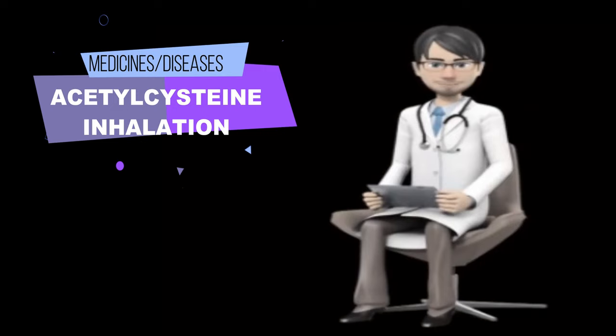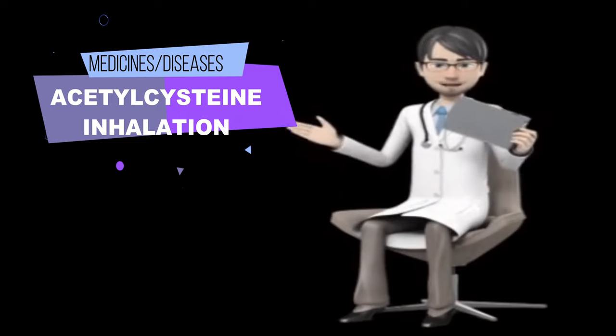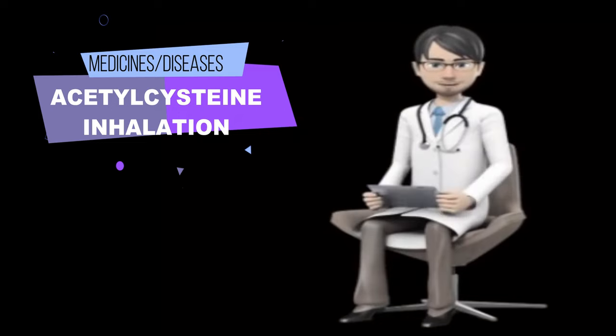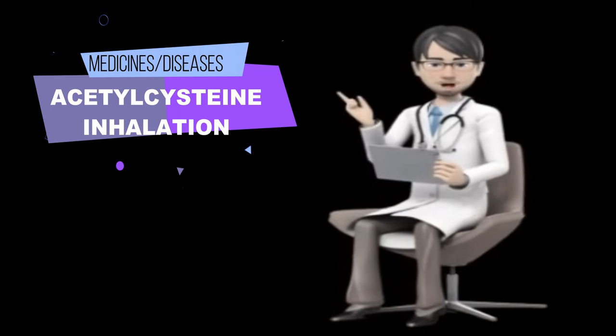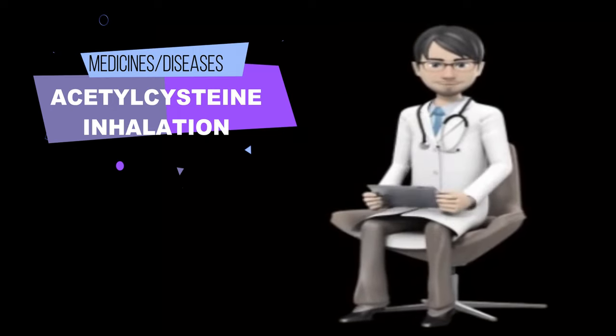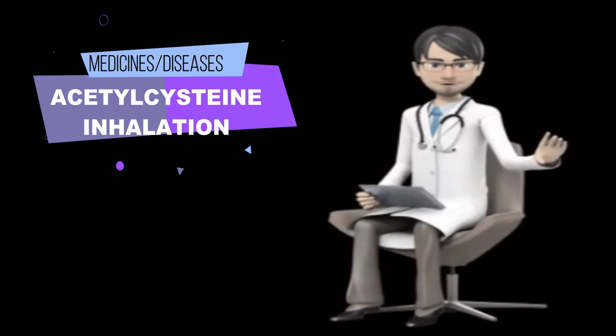How to use acetylcysteine inhalation? Acetylcysteine comes as a solution, liquid and concentrated solution to inhale by mouth using a nebulizer machine that turns medication into a mist that can be inhaled. When using a nebulizer, it is usually used three to four times a day.